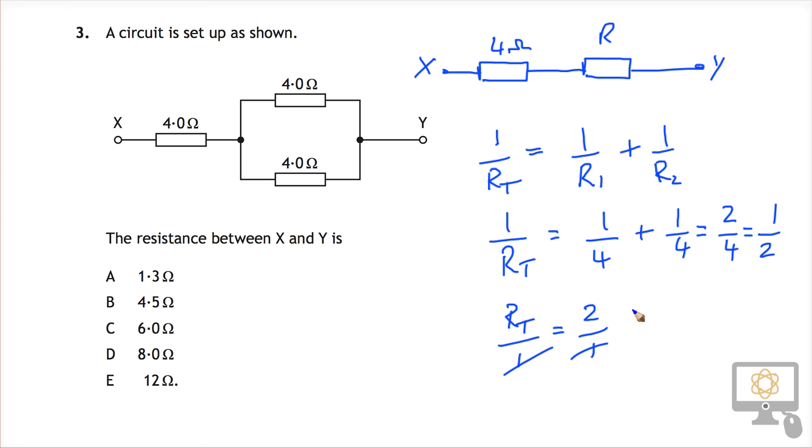The 1s cancel and you're left with RT is equal to 2 ohms. And so that RT represents this R up here, and I'll maybe just call it RT just for clarification.